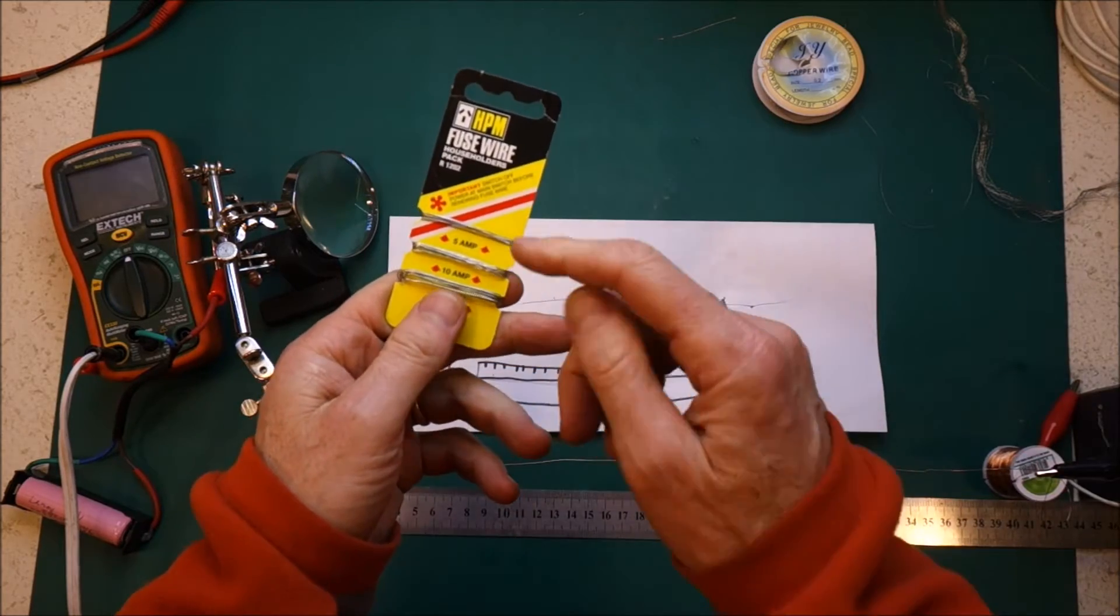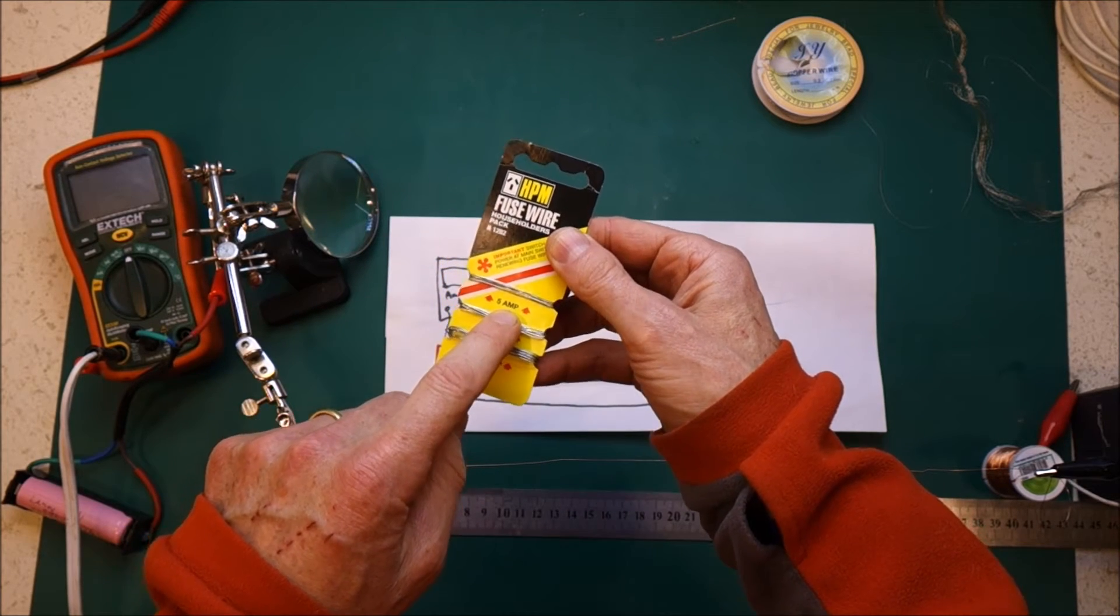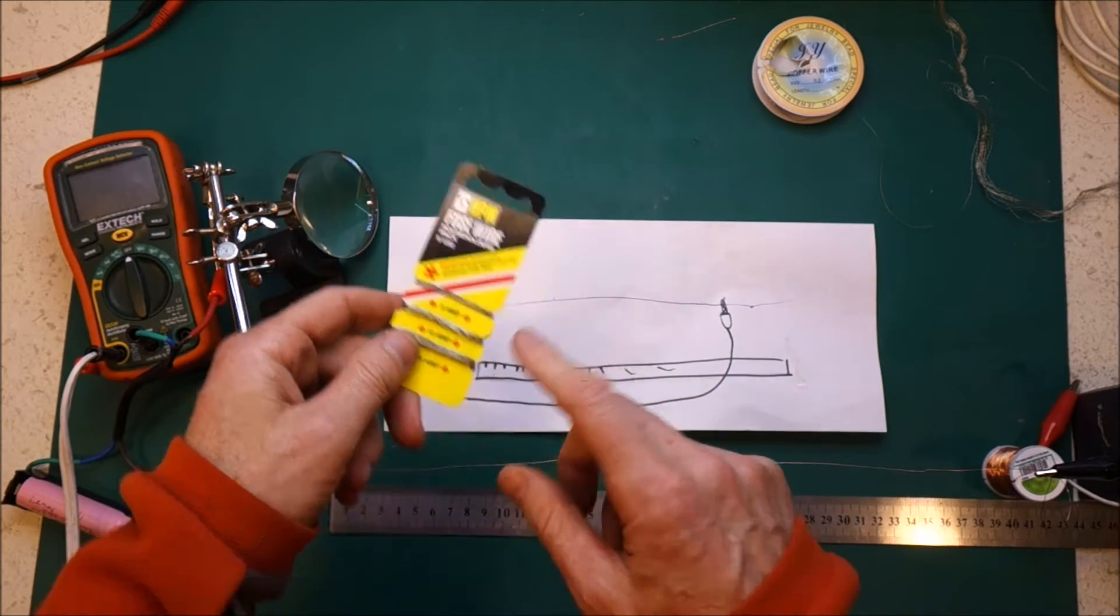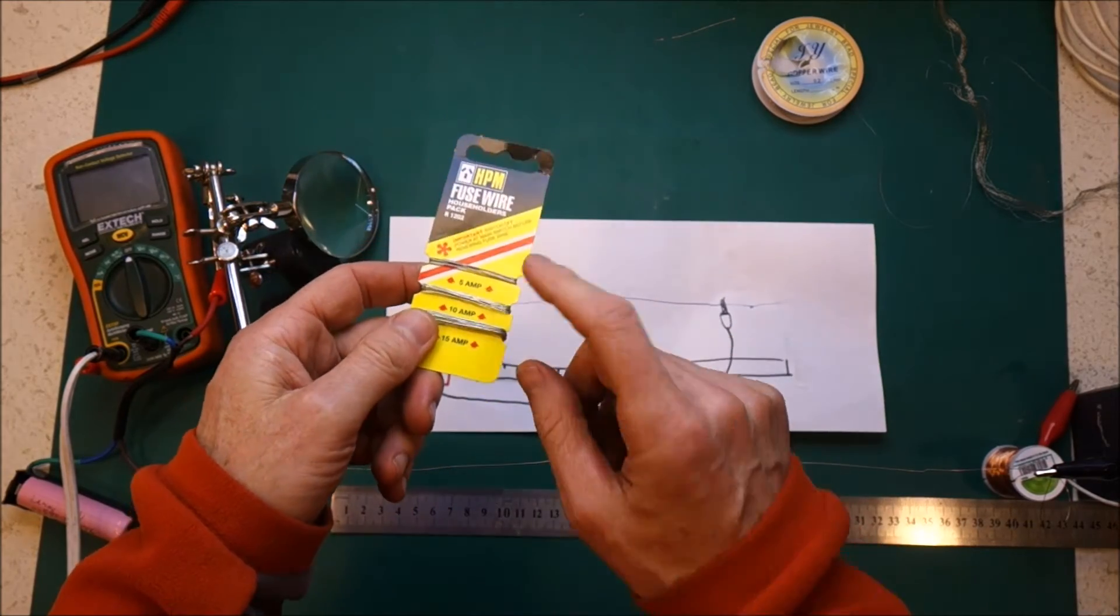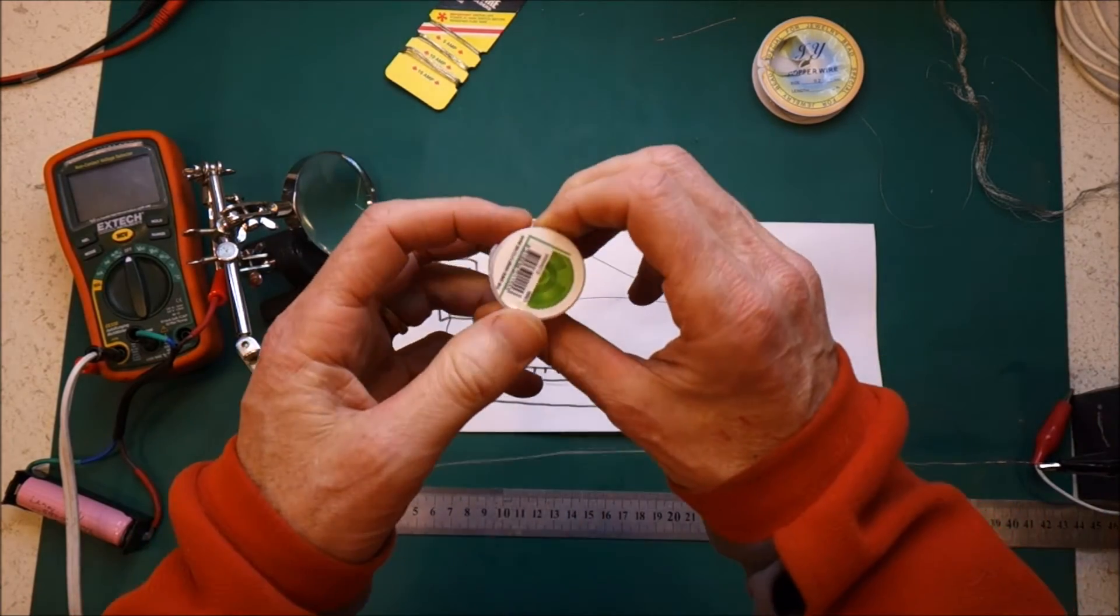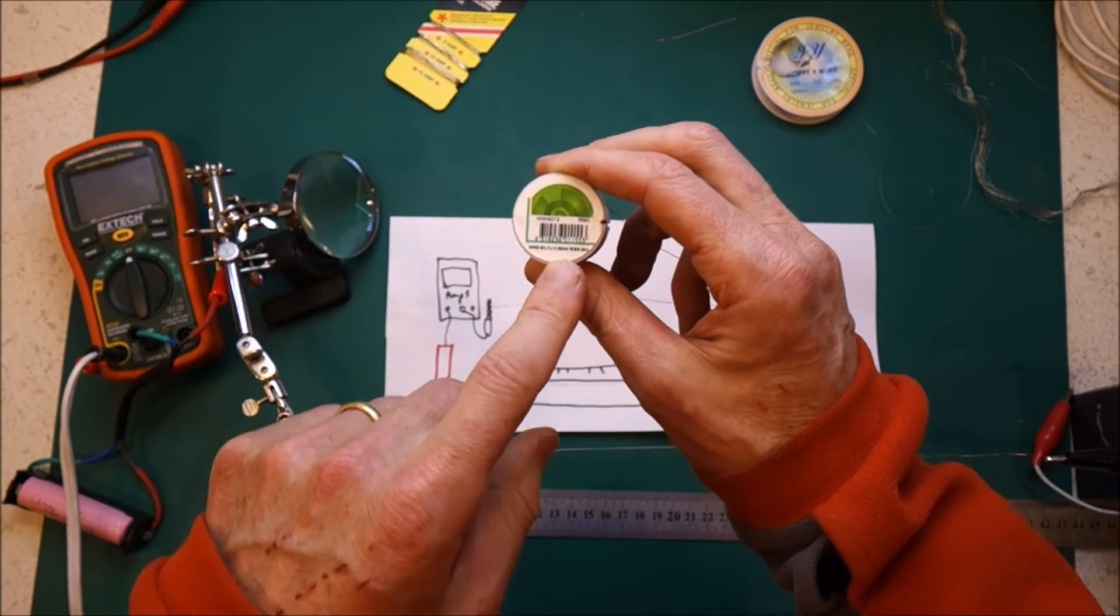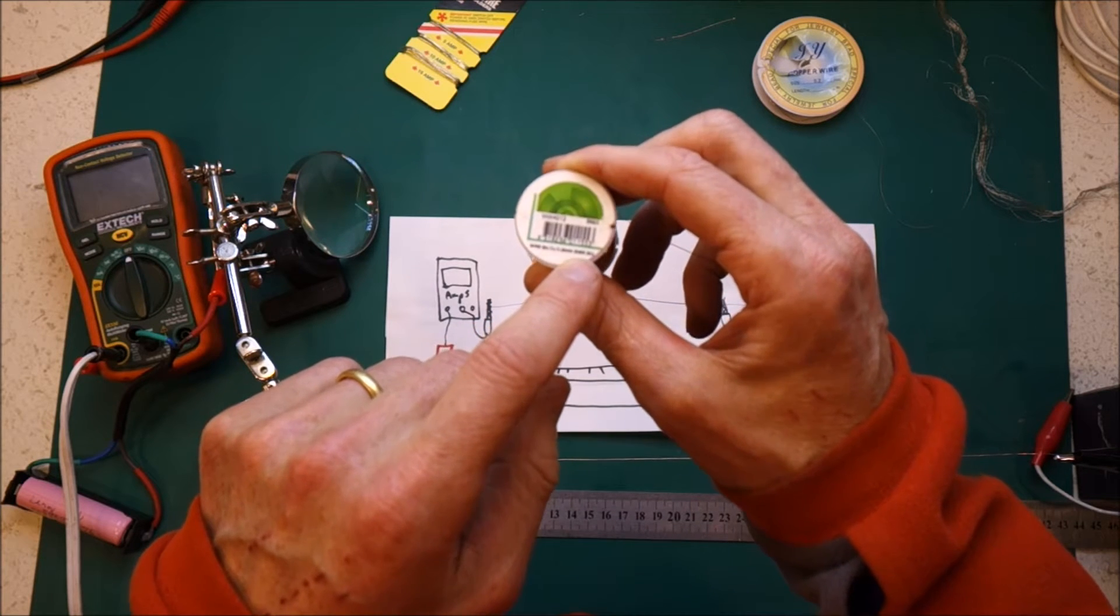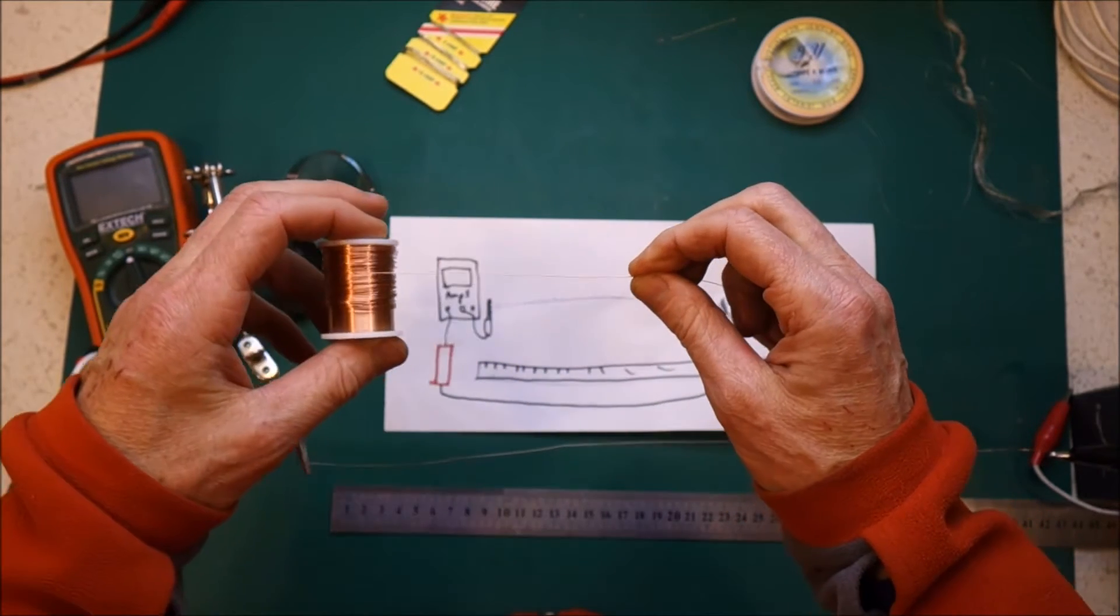You can go and buy fuse wire of various types that might have say for example a 5 amp fuse rating but it's nice to test whether it really does burn at that level. And rather than actually shell out a lot of money for small bits of real fuse wire the other thing you can do is you can use this enamel wire that's really easy to buy from an electronics store, eBay, AliExpress, whatever. And this is, I think it says 0.25mm diameter. So pretty thin. And that is wire that I've used quite a lot on my packs.